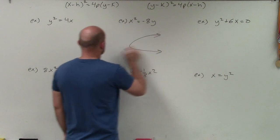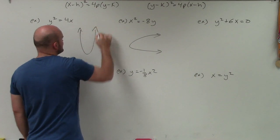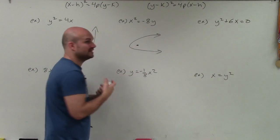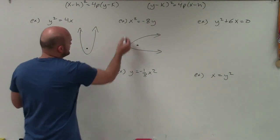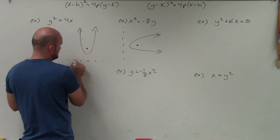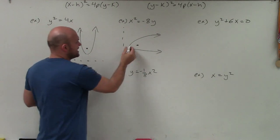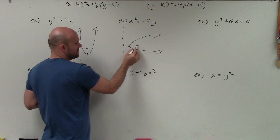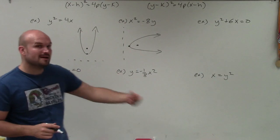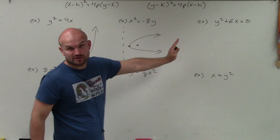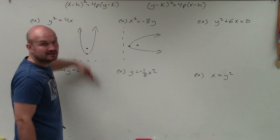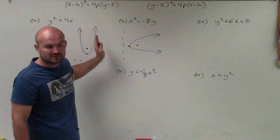If we have a parabola, it could open up, down, left, or right. The focus is always going to be where the parabola is opening into. The directrix is a line that is perpendicular to the axis of symmetry and is the same distance from the vertex. So the vertex to the focus is equidistant from the vertex to the directrix. If the value of p is positive, it's going to go to the right or open up, whereas the opposite of p is for the directrix.